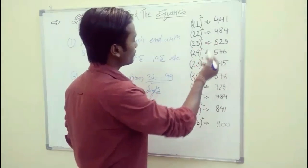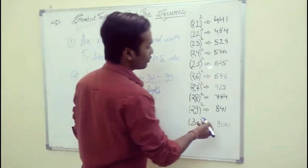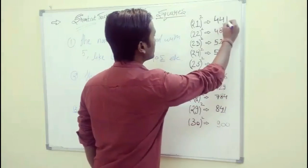If you see that the square of 21 is 441 and the square of 29 is 841, the last two digit numbers are same.